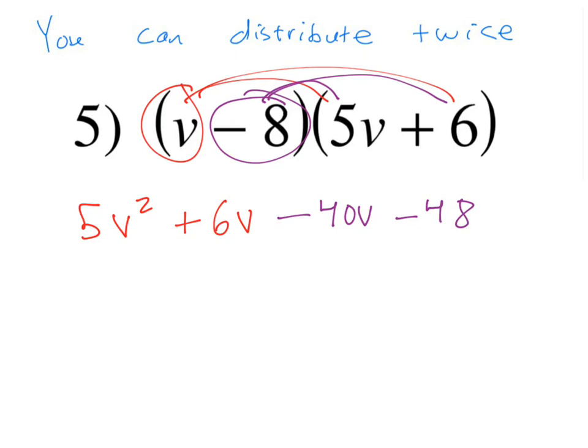Once you're at this point, you do need to figure out if any of these things combine. Well, this has got v squared, and there's no other v squared terms. So that's going to stay by itself. Now, this one is 6v, and this one is also a v. And so these combine because they're like terms.